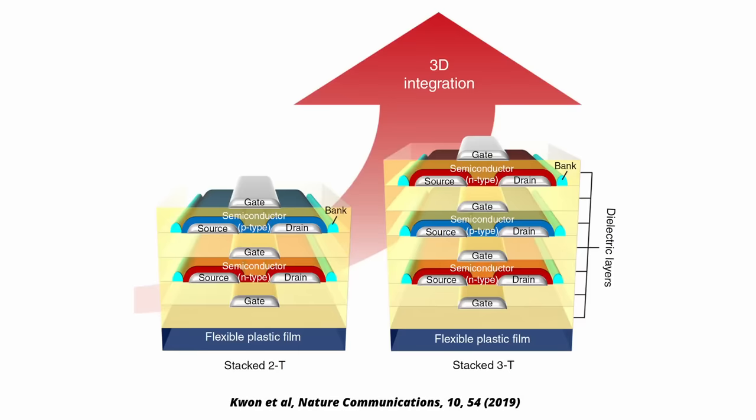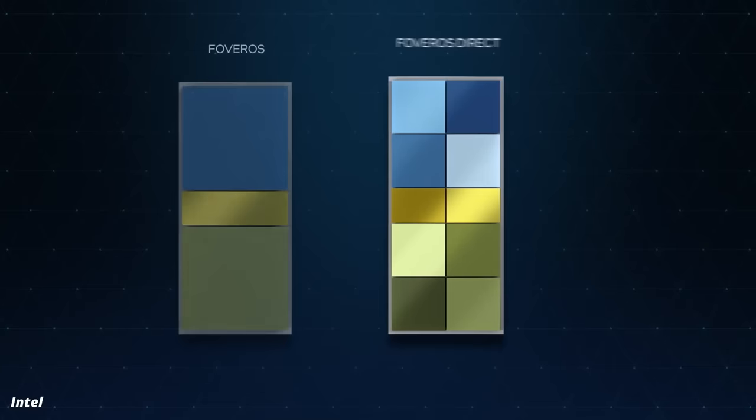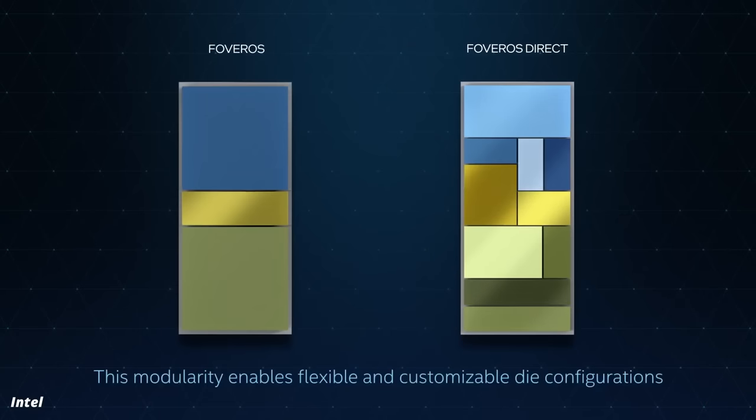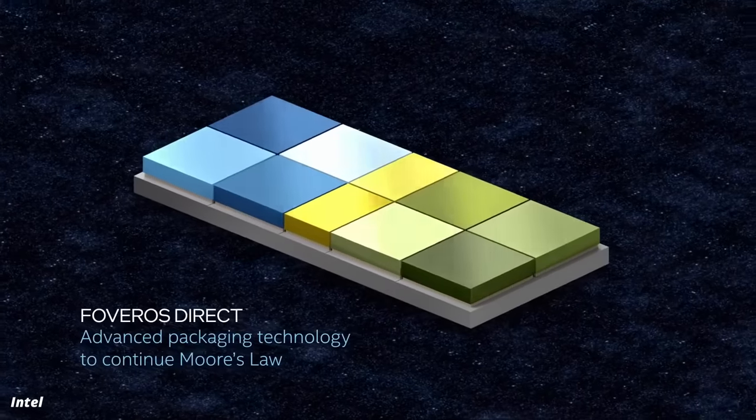The path that most chip makers are pursuing for the moment is to stack transistors on top of each other. At present, transistors are etched into flat silicon surfaces next to each other, but if you could stack them, then you could get more computing power into small spaces, and that'd continue Moore's Law, if by other means than previously.